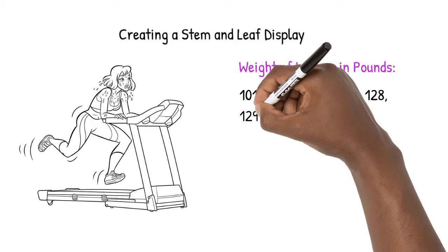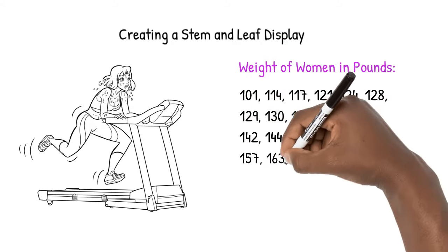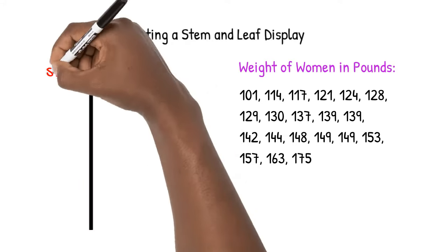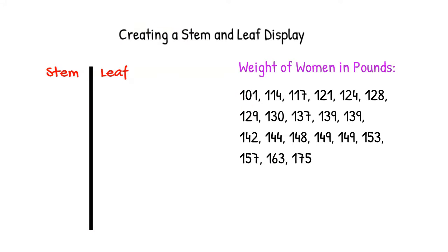We can look at the weights of all the women listed, but if we organize our data as a stem and leaf display, we will be better able to understand our data and how to work with it.